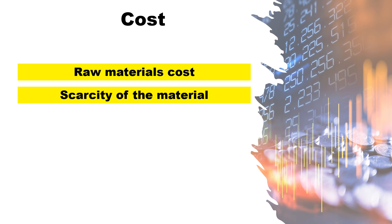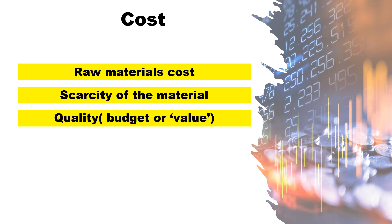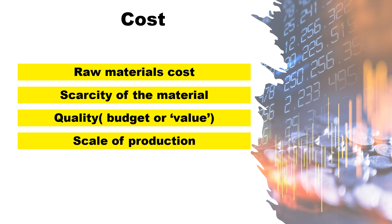Costs of materials and components are determined by many factors such as the raw materials value, the scarcity or abundance of the material or component, the quality of the material, the scale of production, and the bulk or quantity of the materials purchased.